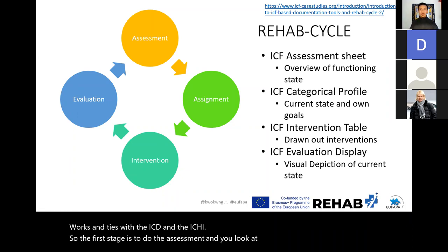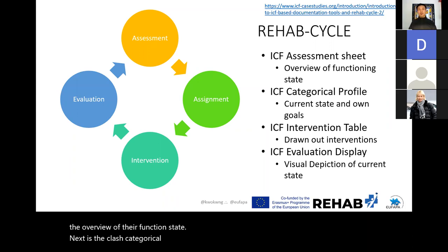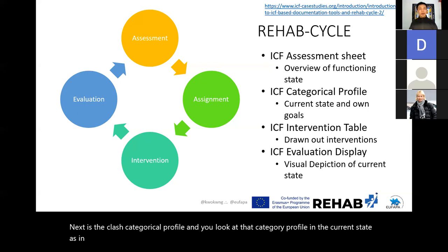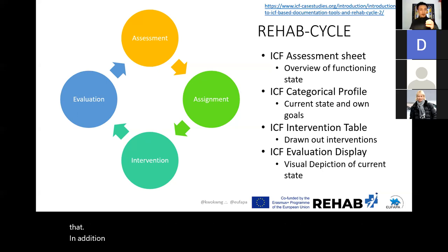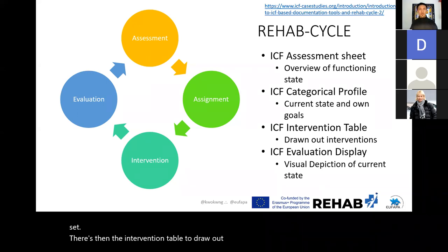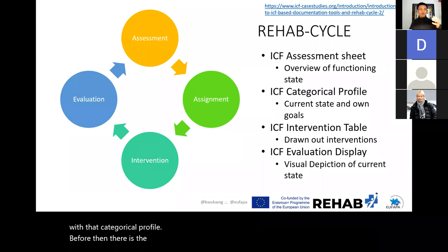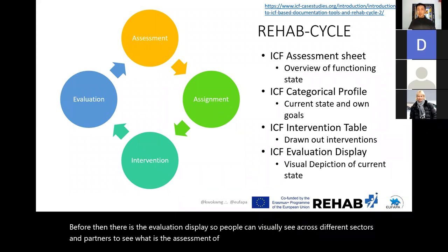Next is the categorical profile — looking at that profile in the current state for that person, which you can compare and share with colleagues. In addition, there is the idea of creating goals, and once those goals are set, there's an intervention table to draw out which evidence-based interventions should be used. Finally, there is the evaluation display so people can visually see across different sectors and partners what the assessment of that person is, then we go back to the assessment again.